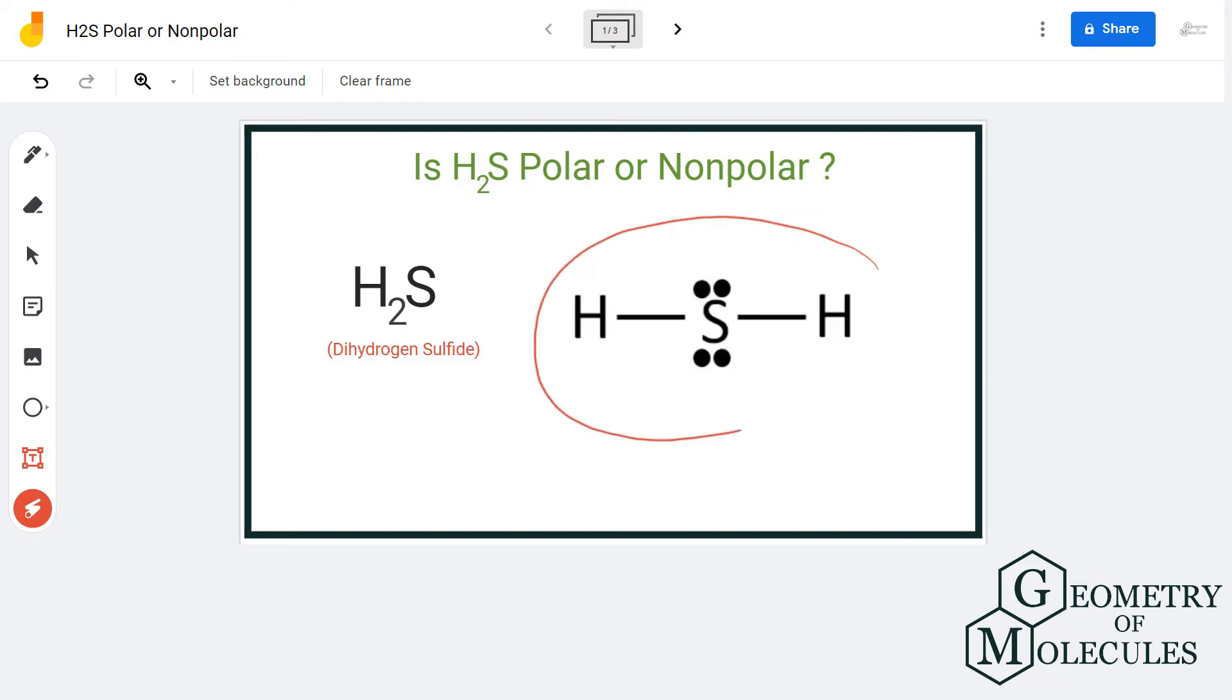Here is the Lewis structure for H2S in which sulfur is in the center and two hydrogen atoms are on the outside. There is also the presence of two non-bonding pairs of electrons, or lone pairs of electrons, on the sulfur atom.